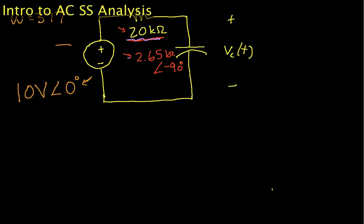Welcome to this video, which is the second part of an introduction to AC steady-state analysis. In this video, we will complete the example that we started in part one, in which we were trying to find the voltage across a capacitor in a circuit where the source was a sinusoid of magnitude 10 volts.